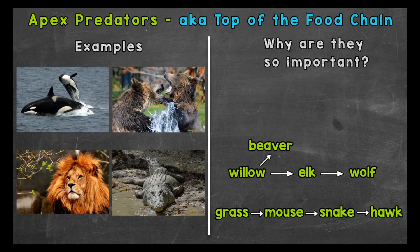For examples we have orcas or killer whales, grizzly bears, lions, and saltwater crocodiles. All apex predators are at the top of the food chain when fully grown.